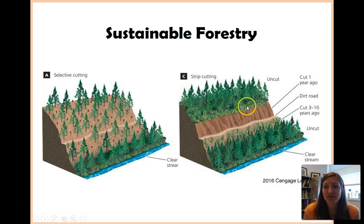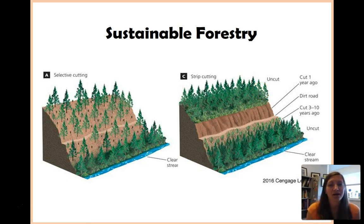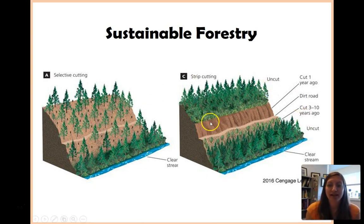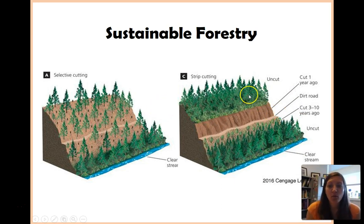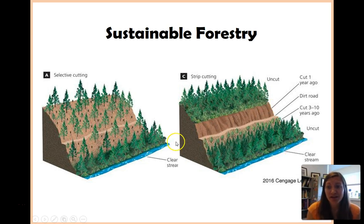Another example is strip cutting. This isn't really as good as selective cutting, but it's at least better than clear cutting. It's essentially clear cutting but on a smaller scale — instead of getting rid of the entire forest, you're only getting rid of a strip of forest. You still have a way to get seeds into the new area, but even in this picture, there is still some erosion left behind.